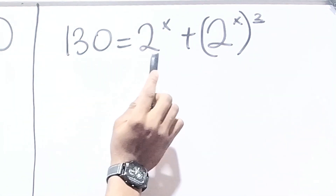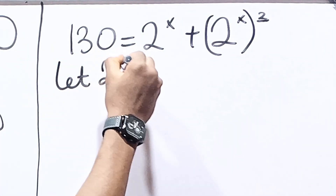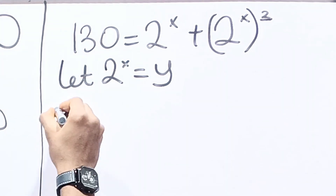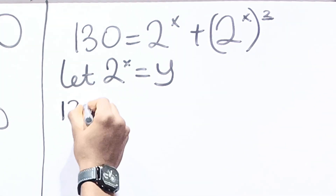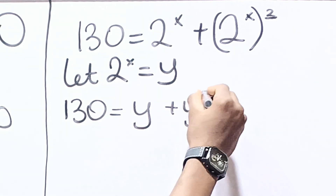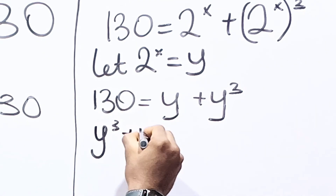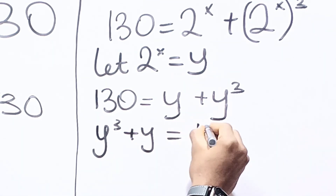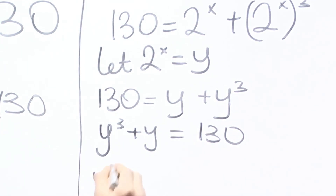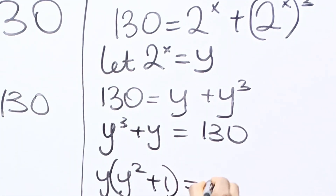Let 2 raised to the power x equal y. Then we have 130 equal to y plus y cubed. From here we can say y cubed plus y is equal to 130. Factoring out y, we have y times (y squared plus 1) is equal to 130.